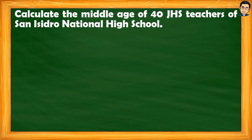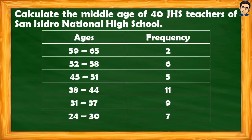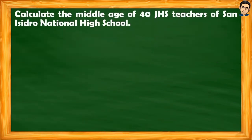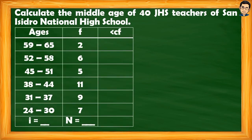Let us now have two examples so you can better understand how to apply the formula. For the first problem: calculate the middle age of 40 junior high school teachers of San Isidro National High School. Here is our data — we're talking about ages, ranging from 24–30 up to 59–65, with the frequency per class indicated. Let us set up the frequency distribution table.